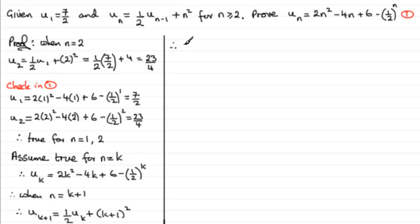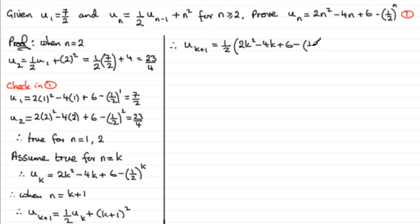Now we substitute what we assumed the kth term was. We assumed uₖ equals 2k² minus 4k plus 6 minus one-half to the power k. So uₖ₊₁ equals one-half times [2k² minus 4k plus 6 minus (one-half)ᵏ] plus (k plus 1) squared.